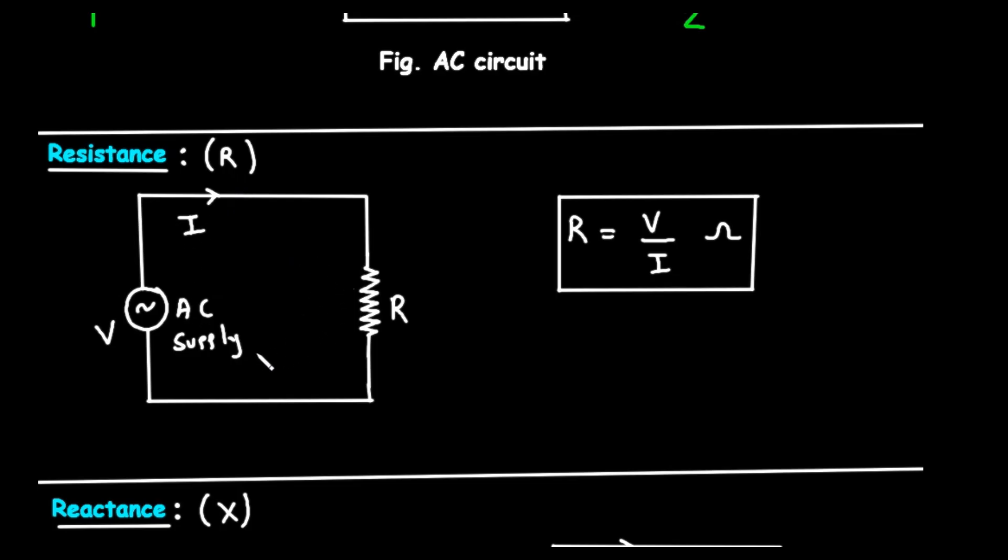The diagram shows a simple circuit with our AC supply connected to a component with a zigzag line. This is the symbol for a resistor, labeled R. In a purely resistive circuit like this one, the opposition to the current is straightforward. The formula shown in the box is a version of Ohm's law.